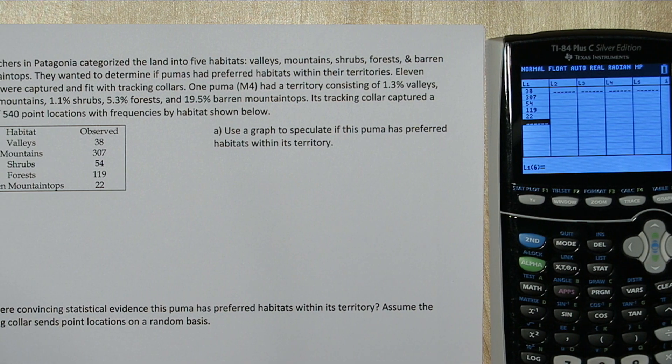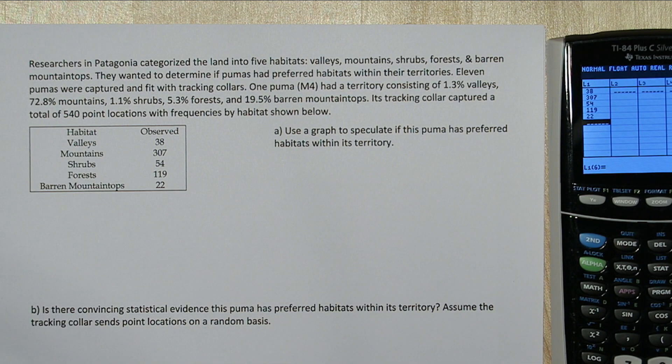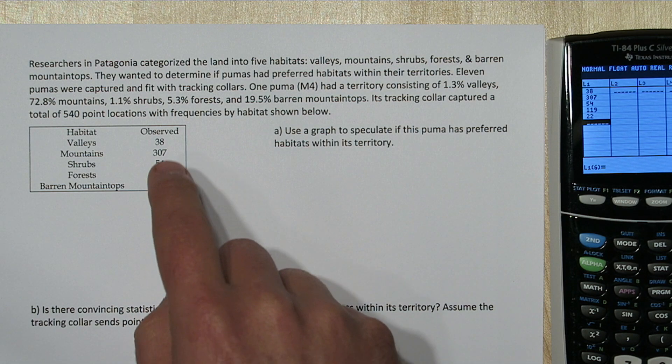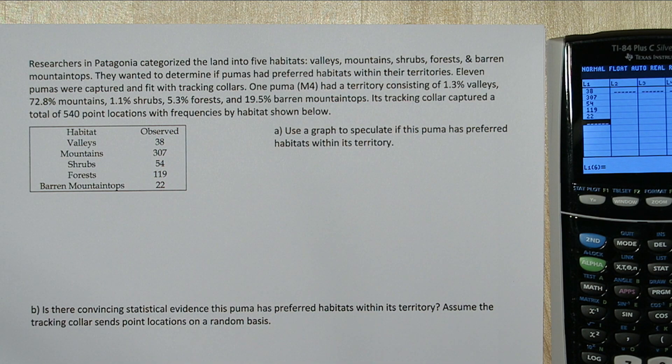So in the stem of the problem, it said there's a total of 540 point locations. So what we want to do is divide each of these values by 540.